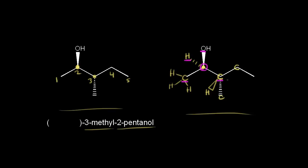Let's assign priority to our four groups based on atomic number. We look at the atoms directly bonded to that carbon: there's an oxygen, a hydrogen, a carbon on the left, and a carbon on the right. Oxygen has the highest atomic number, so oxygen gets highest priority — number one, the OH group. Hydrogen has the lowest atomic number, so hydrogen gets lowest priority — number four. Now we have a tie between the two carbons, so we look at the atoms directly bonded to those carbons. The carbon on the left is bonded to three hydrogens; the carbon on the right is bonded to two carbons and one hydrogen.